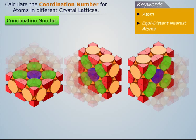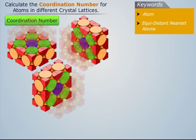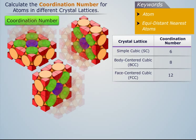The first set of four atoms is in the plane of the corner atom. Two atoms from each of the remaining sets are above, and the other two atoms from both these sets are below the plane of the corner atom. Thus, the coordination number for the corner atom in a face centered cubic lattice is 12.